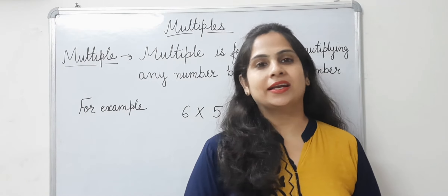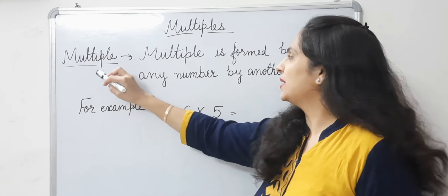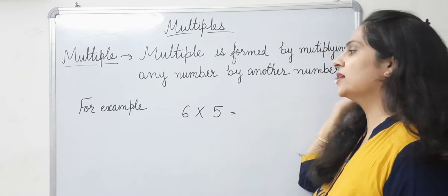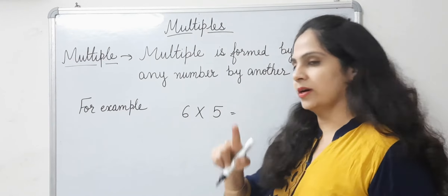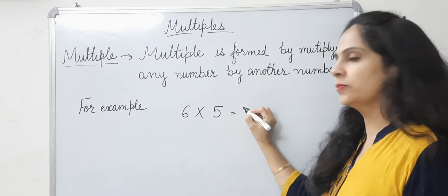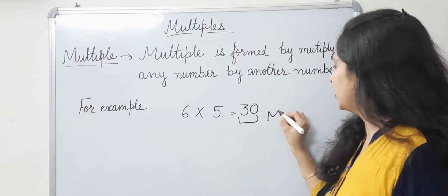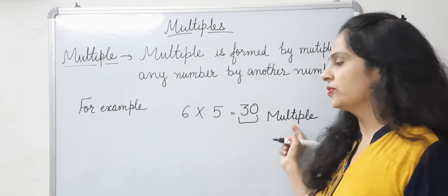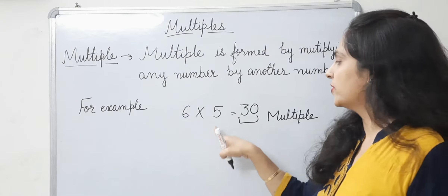But before that, let's understand what is a multiple. A multiple is formed by multiplying any number by another number. Let us consider an example: 6 multiplied by 5 is equal to 30. Here 30 is called a multiple. It is a multiple of 6, and 30 is also a multiple of 5.